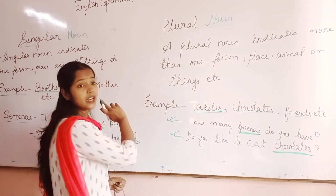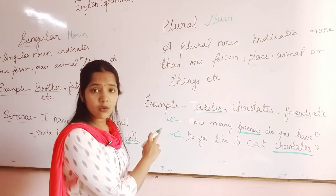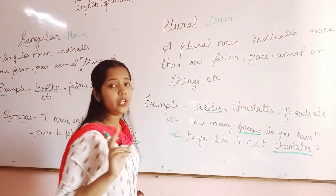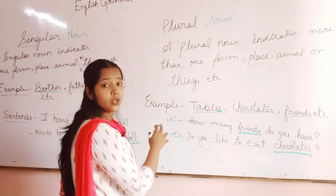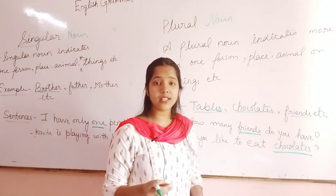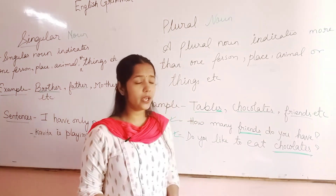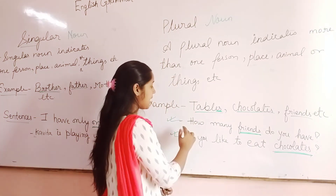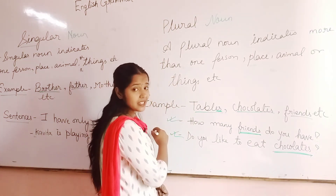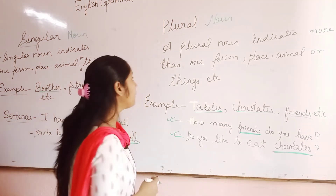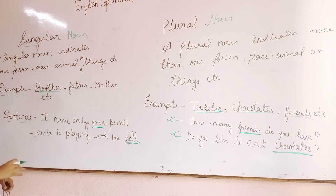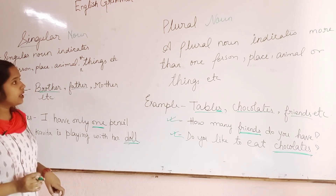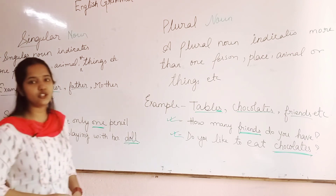So singular noun means only one person, animal, or thing — not more than one. Plural noun means more than one person, animals, and things. We are giving examples and sentences here, so go through them. Whenever you don't understand, I am there to solve it. Thank you.